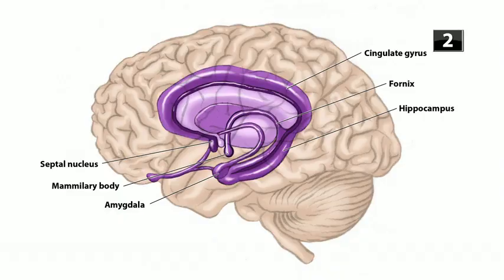Next question: which regions of the brain are included in the limbic system? That's the amygdala, the septal nucleus, the mammillary bodies, the fornix, the hippocampus, and the cingulate gyrus.